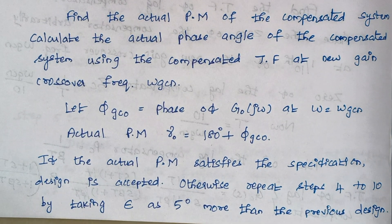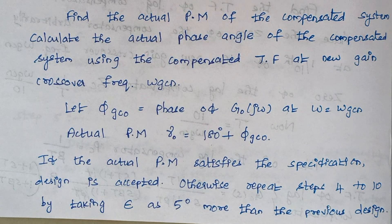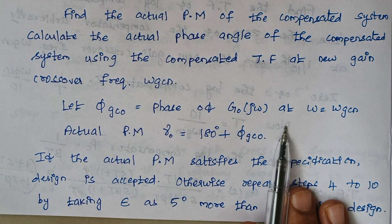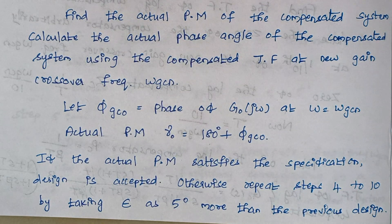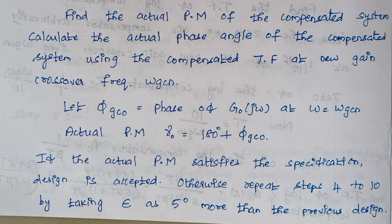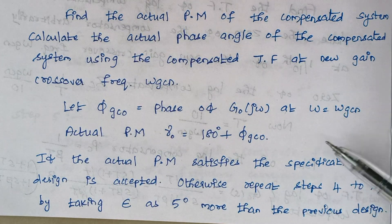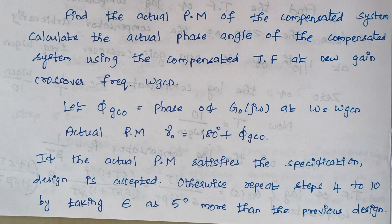If the phase margin does not satisfy the requirement, we repeat steps 4 through 9 by increasing epsilon by 5 degrees more than the previous design. Don't be concerned about this — in most problems, the compensated system will satisfy all requirements. This concludes the procedure. If you have any doubts, let me know in the comment section.